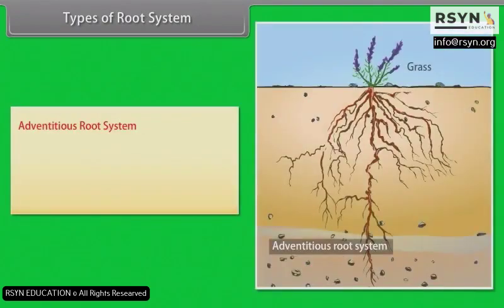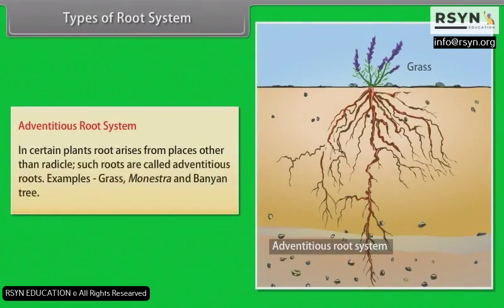Adventitious root system: In certain plants, root arises from places other than the radicle. Such roots are called adventitious roots. Examples: grass, Monstera, and banyan tree.